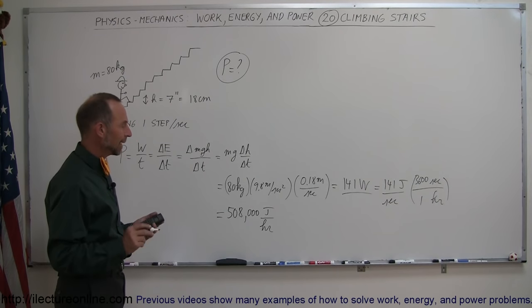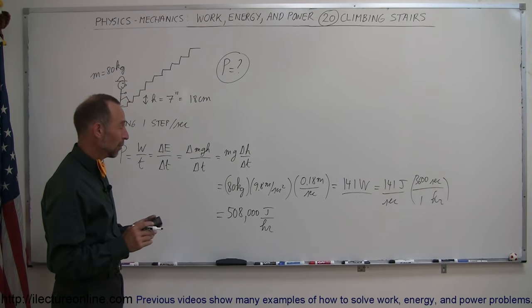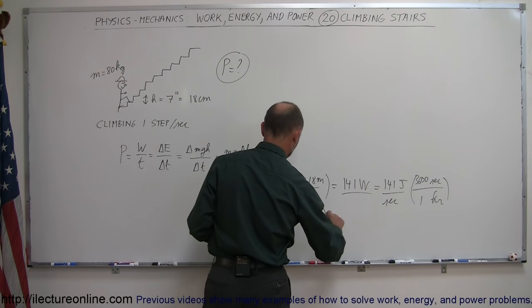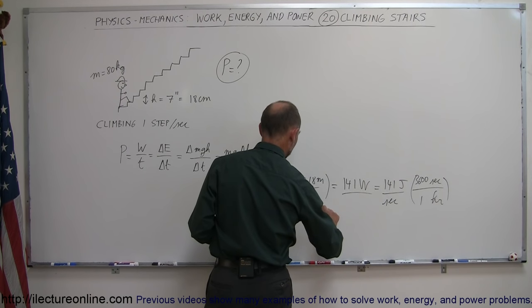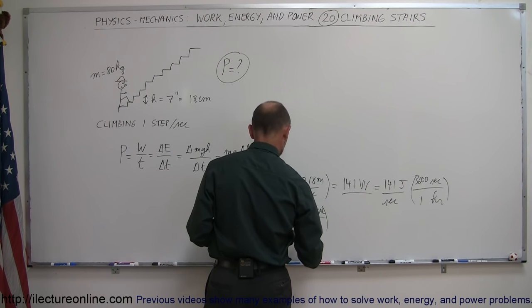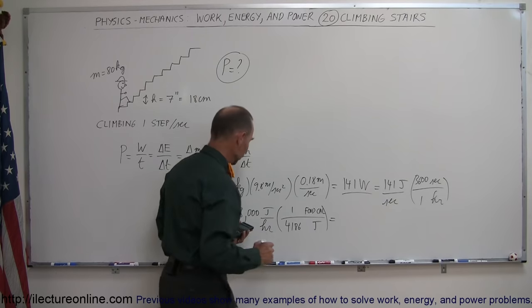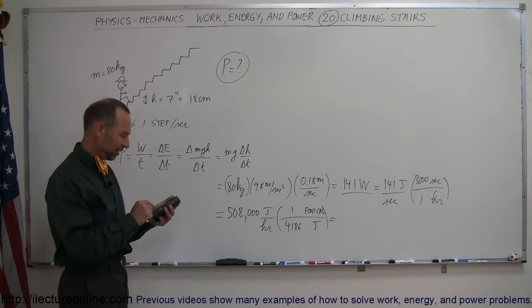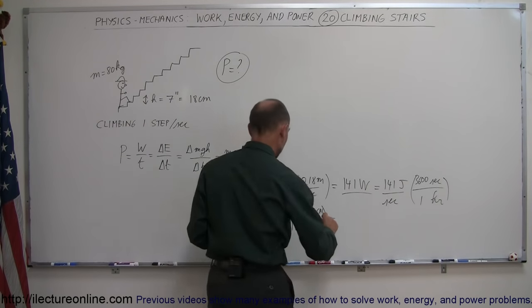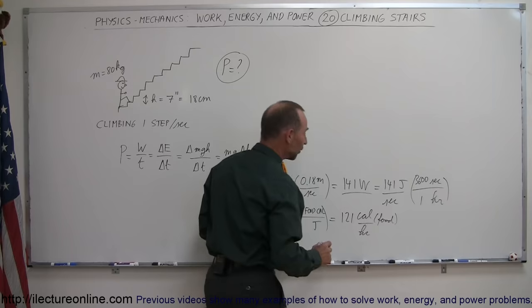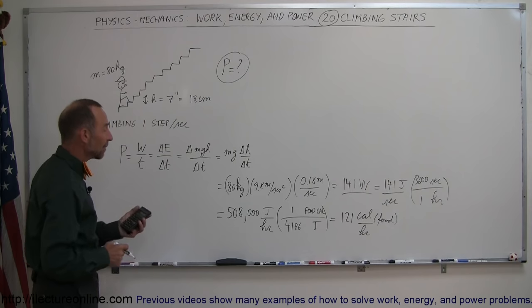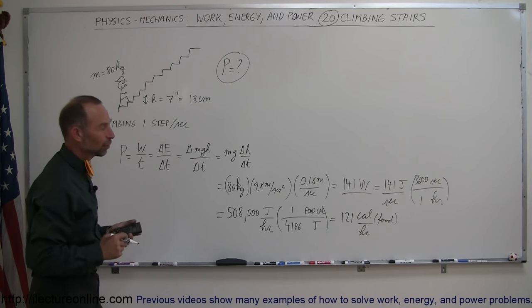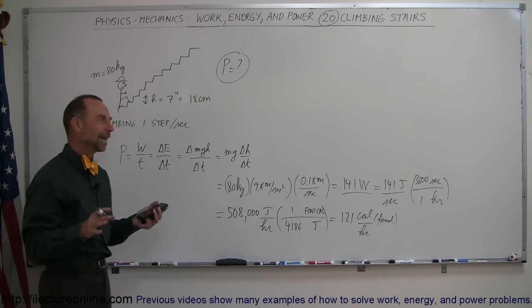And if we then convert that to calories or food calories per hour, we need to convert from joules to calories. So that would be food calories and joules at the bottom here. We have one food calorie is 4,186 joules. If we divide that by 4,186, we get 121 food calories per hour. So going to the gym, walking up the stair master and climbing one step per second, you're burning up about 121 calories per hour.